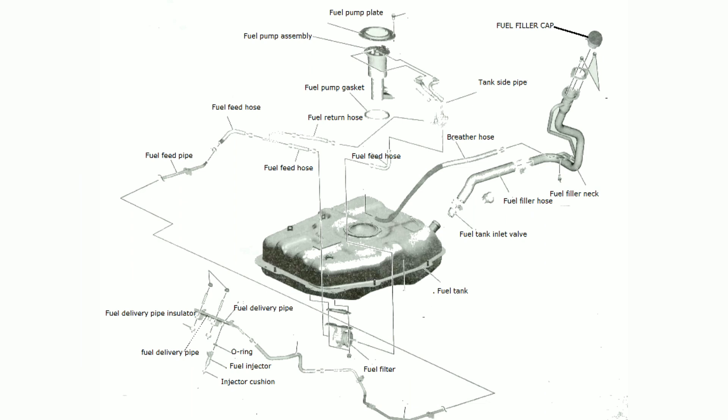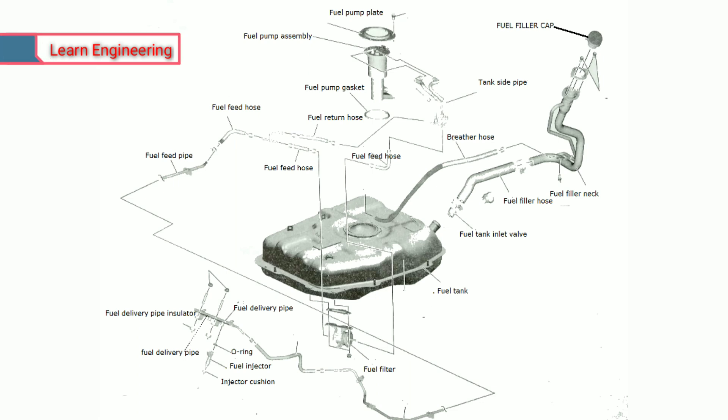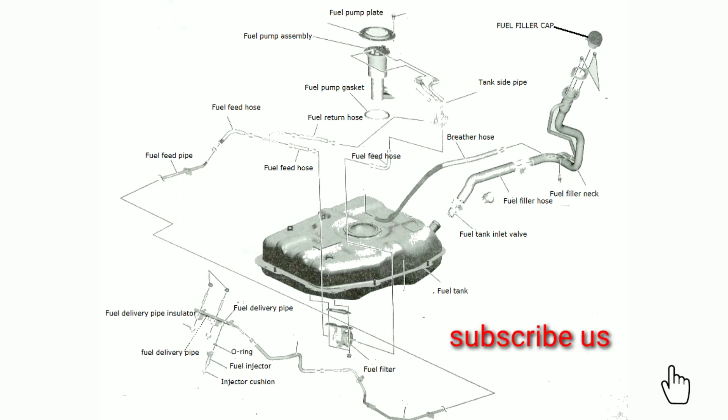Fuel system components consist of the following: fuel filler neck, breather hose, fuel filler hose, fuel tank inlet valve, fuel tank, fuel pump plate, fuel pump assembly, tank side pipe, fuel pump gasket, fuel filter, fuel return hose, fuel feed hose, fuel feed pipe, fuel delivery pipe, fuel delivery pipe insulator, O-ring, fuel injector, injector cushion, and fuel filter cap.